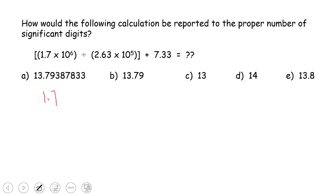1.7 times 10 to the 6 divided by 2.63 times 10 to the 5th. That should give us 6.4638. There are many more digits to come. But if we look at the division step,